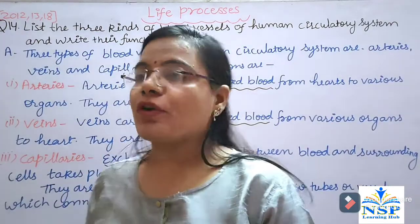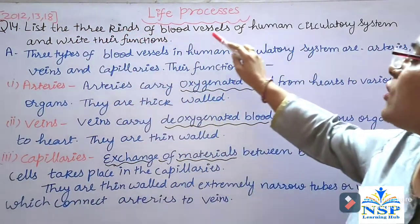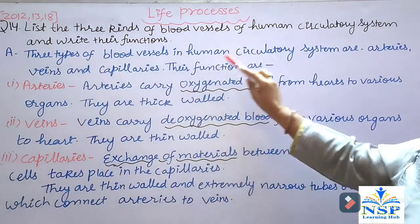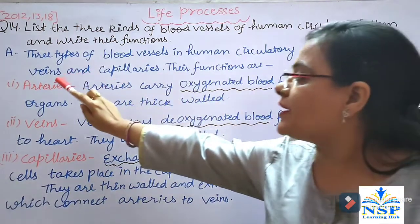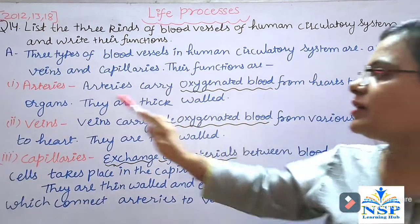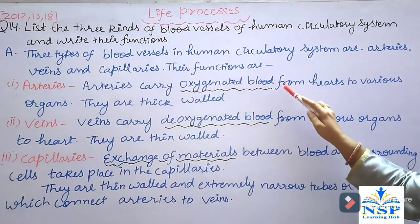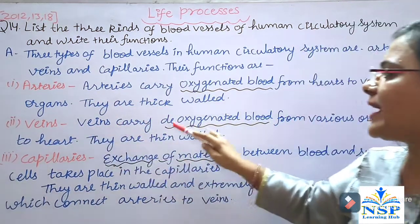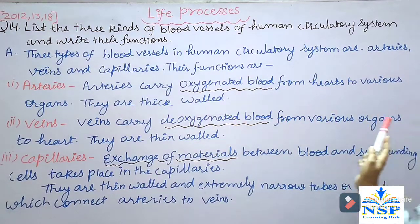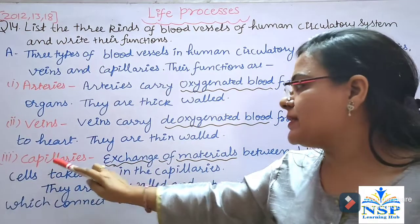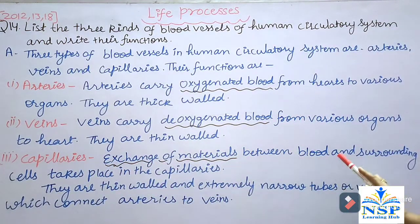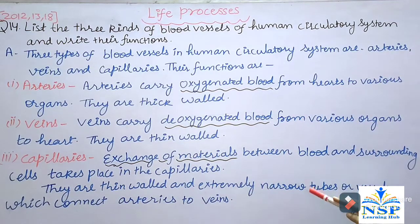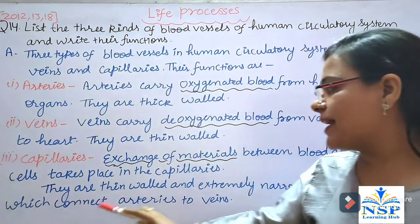Next question: List the three kinds of blood vessels of the human circulatory system and write their functions. The three types of blood vessels are arteries, veins, and capillaries. Arteries carry oxygenated blood from the heart to various organs; they are thick-walled. Veins carry deoxygenated blood from various organs to the heart; they are thin-walled. Capillaries are thin-walled and extremely narrow tubes or vessels that connect arteries to veins; exchange of materials between blood and surrounding cells takes place in the capillaries.